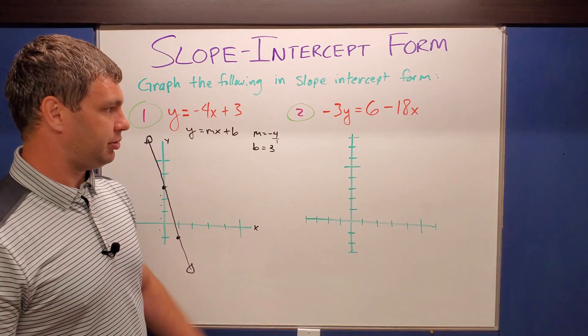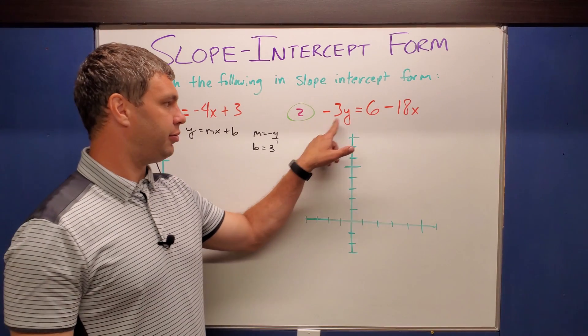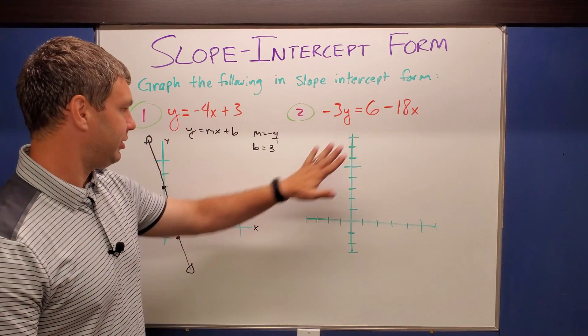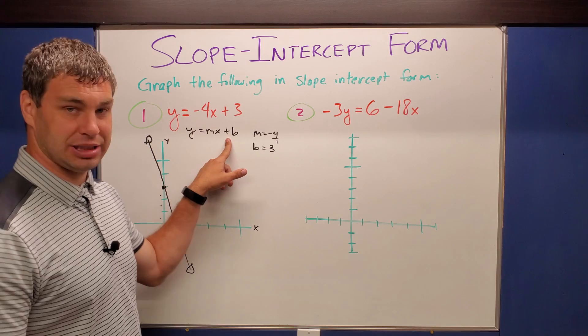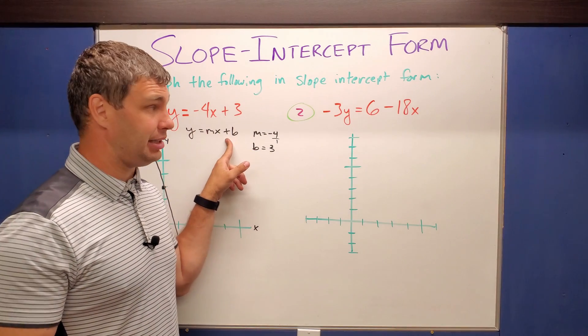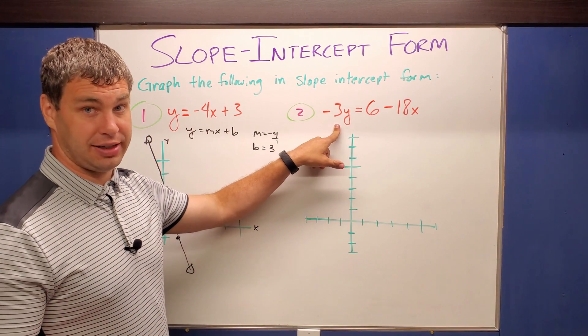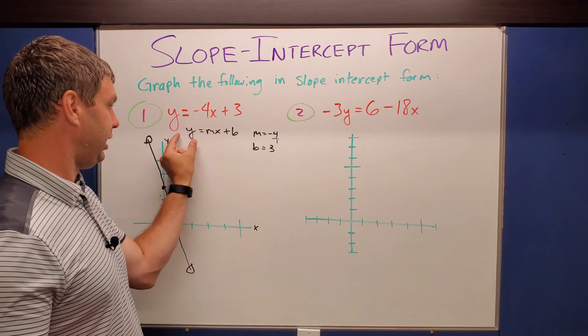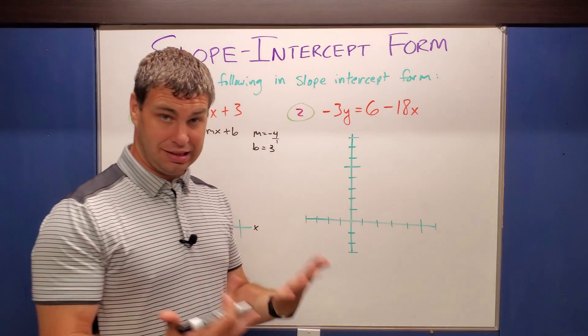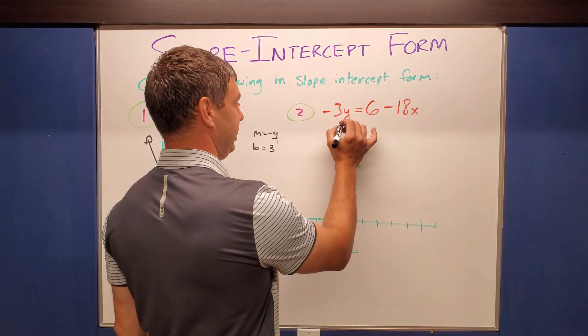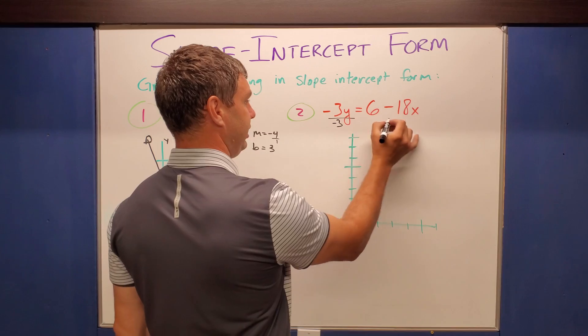Okay, let's do another one. This one's a little bit harder. This one says negative 3y equals 6 minus 18x. So again, it needs to be in the form y equals mx plus b. Currently it's not because the y is not by itself. In our formula the y is always isolated. So we can get there by just a simple step of dividing by negative 3 on both sides.